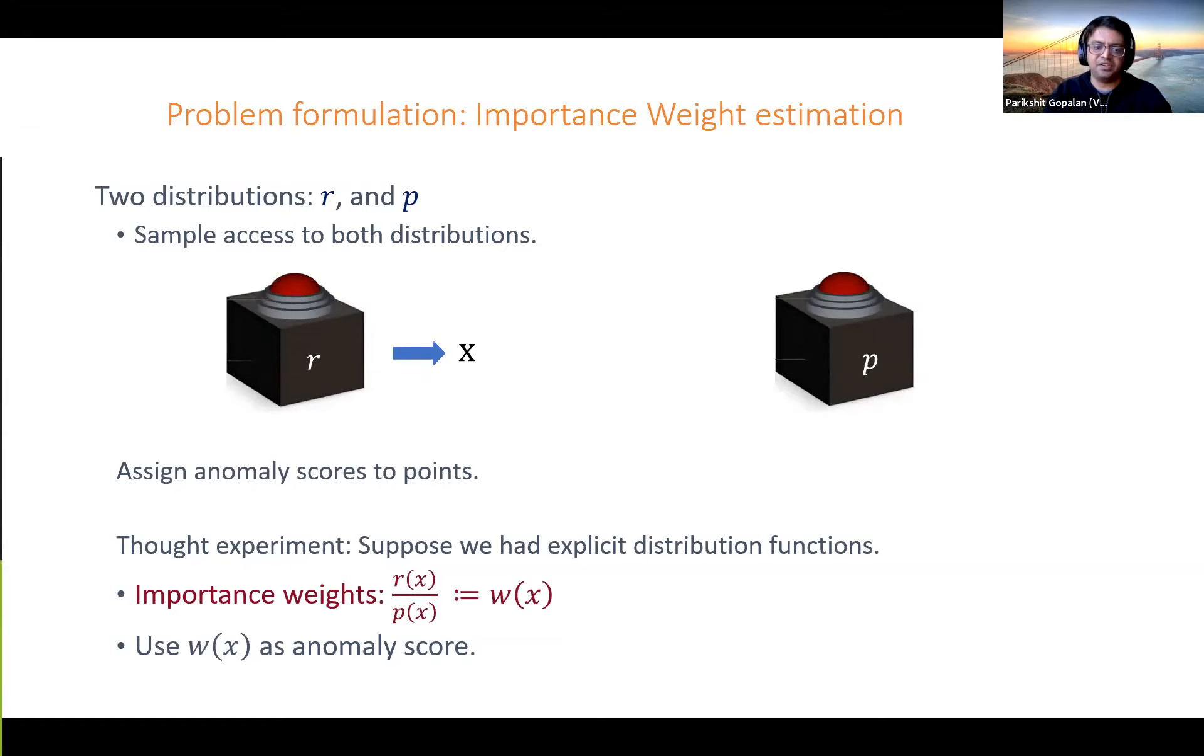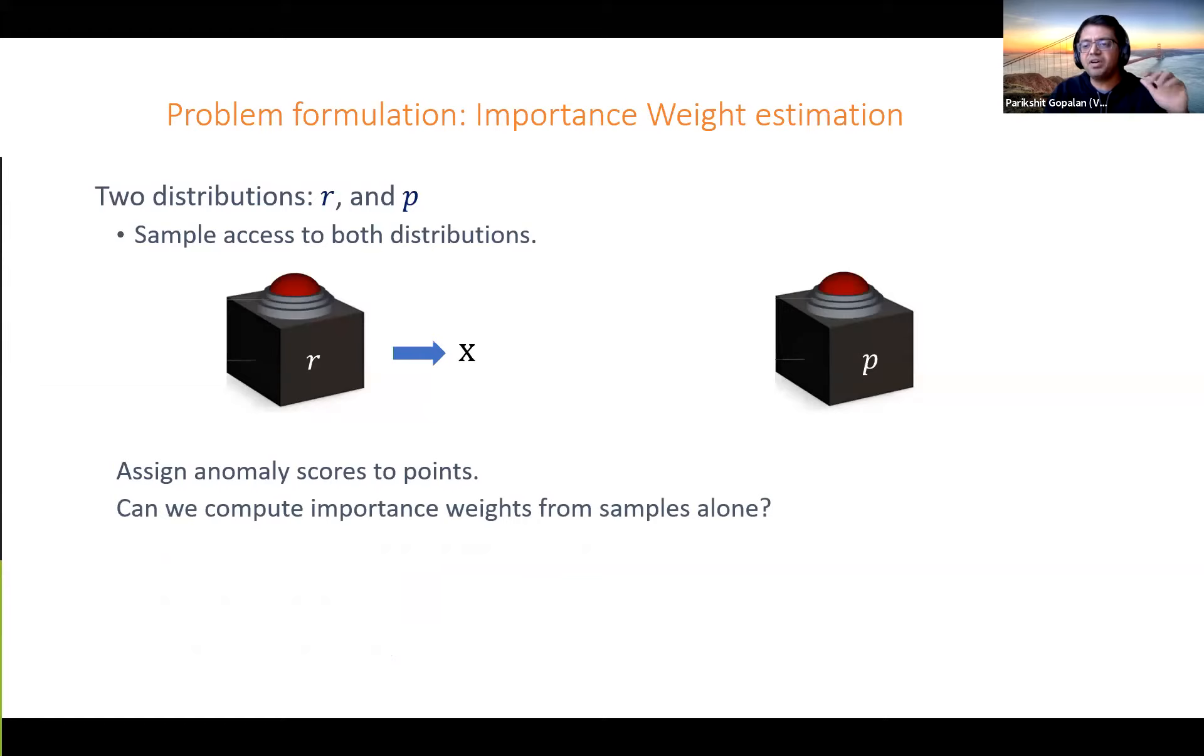In this very abstract setting, if you actually had access to the distribution functions, there's pretty much nothing else you can do. This seems the most natural thing - it has nice information theoretic interpretations and so on. But now we only have sample access. So how can we go about computing importance weights?